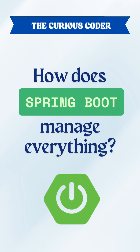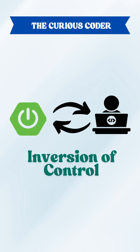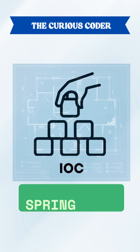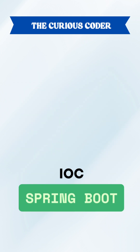Ever wondered how Spring Boot manages everything so smoothly behind the scenes? That magic! It all starts with something called Inversion of Control, or IOC. It's the core concept — the building block of Spring Boot.